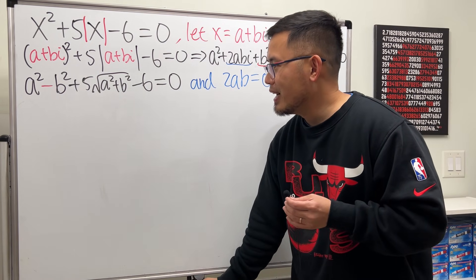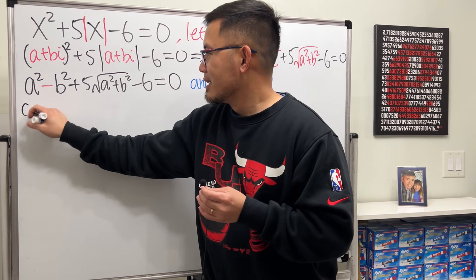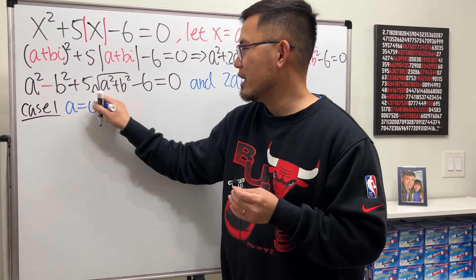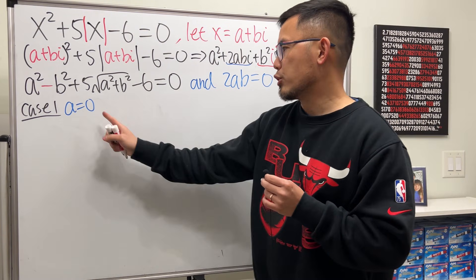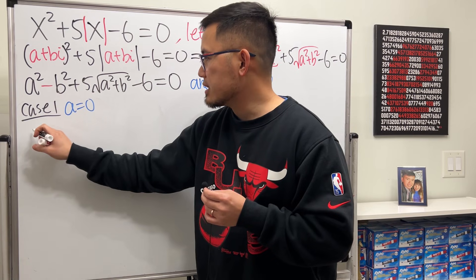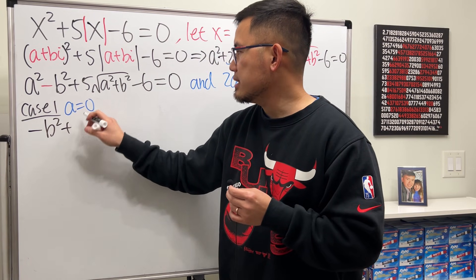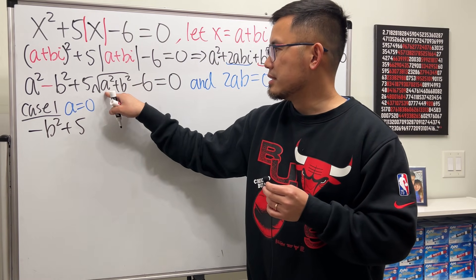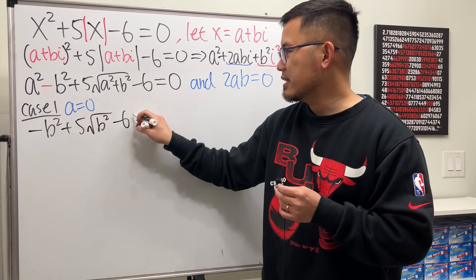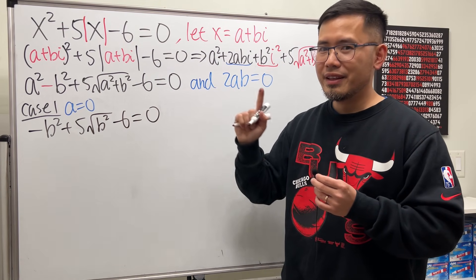So let's go ahead and consider case 1. And case 1, let me just start with, let's say, a equals 0. Now we just have to plug in 0 into all the a's to set up the equation. We will get negative b squared plus 5. This is 0 already, so we just have square root of b squared. And then minus 6, and that's equal to 0. Now, keep in mind,